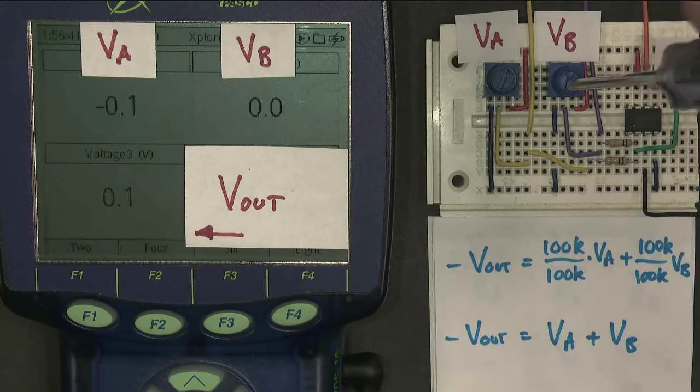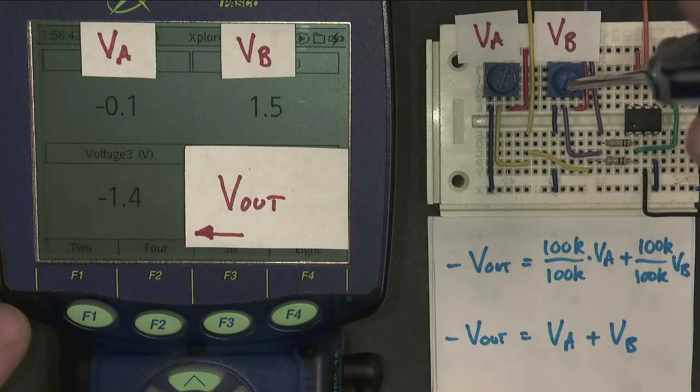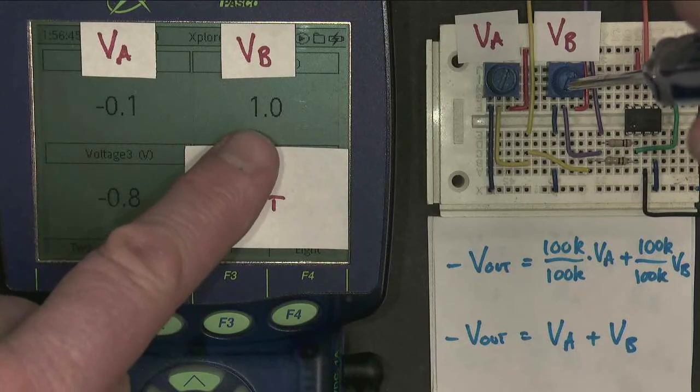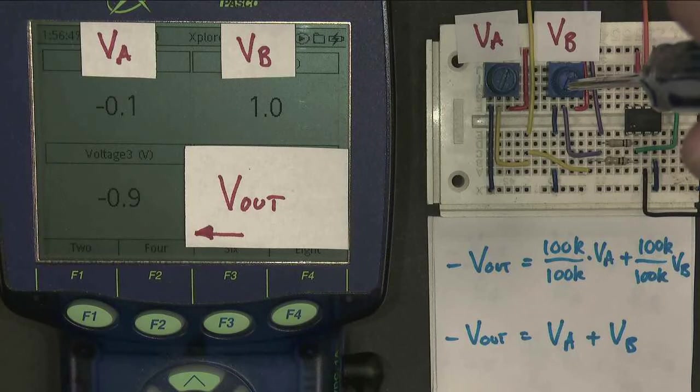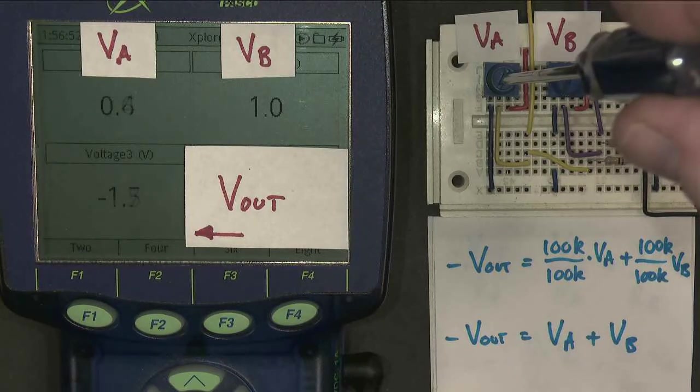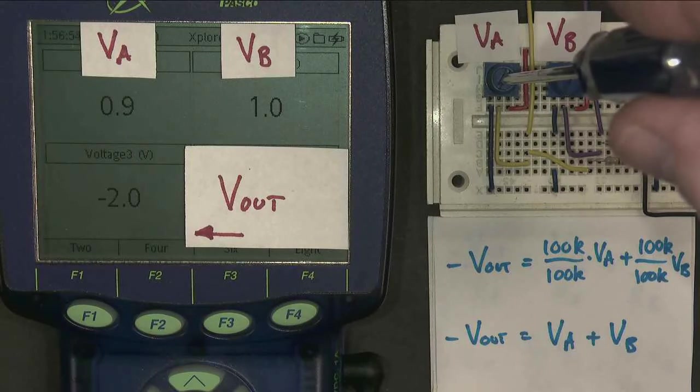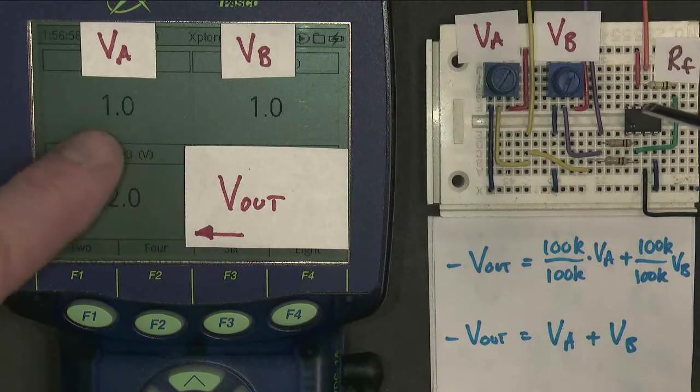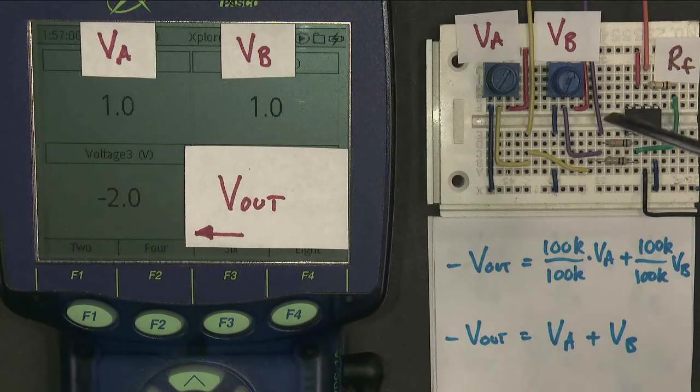I'll change VB. It becomes one volt. My output is almost minus one volt. But if I now make them both one volt,